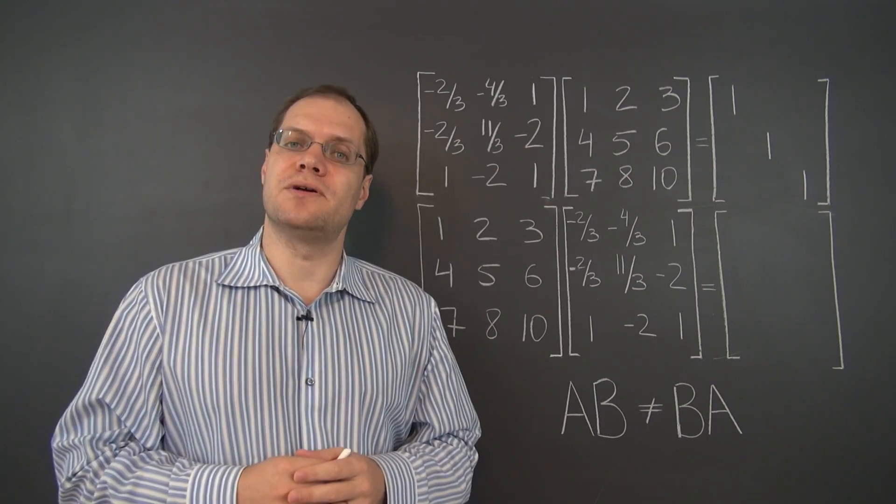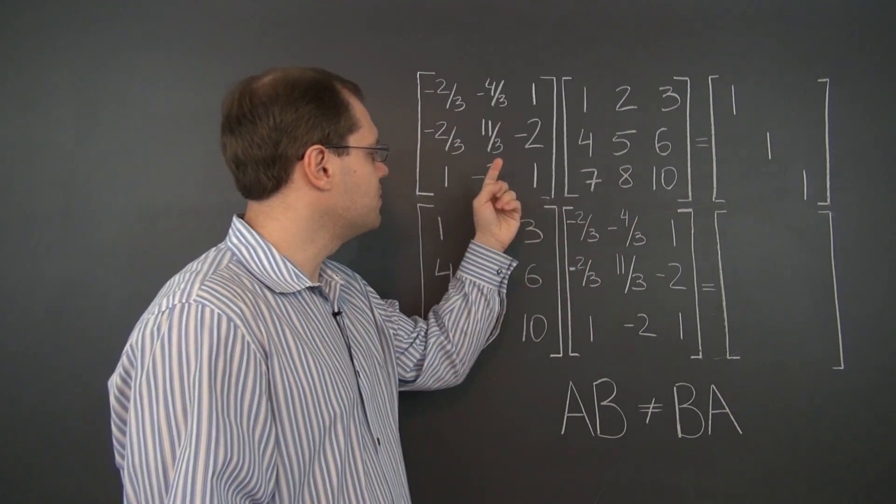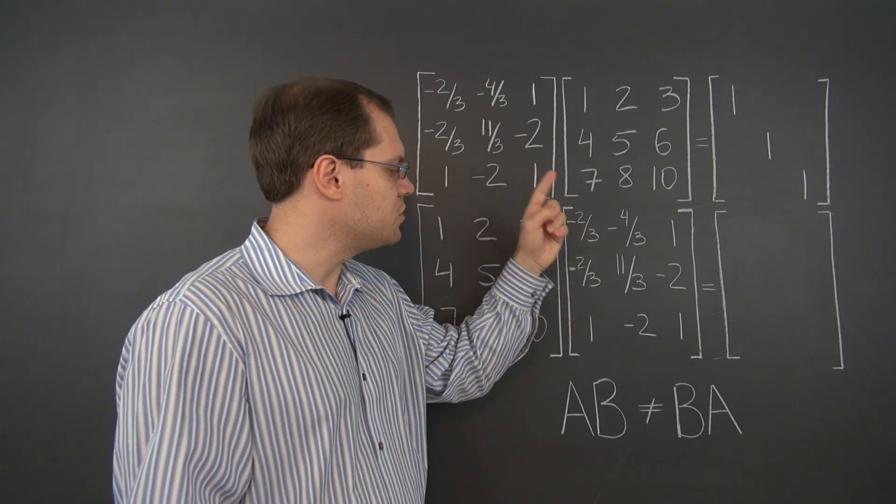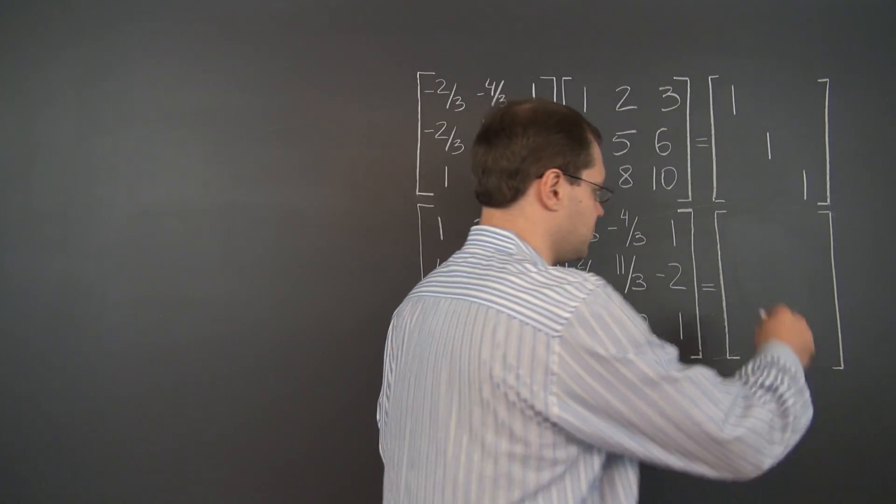Now the second miracle is that for any matrix that has an inverse, whether you multiply by that inverse on the left or on the right, you get the identity matrix.